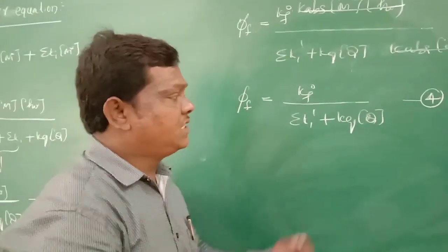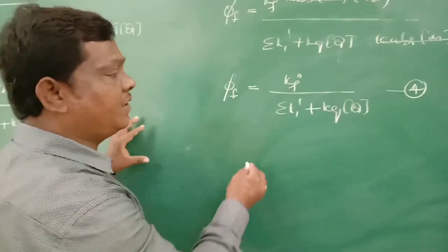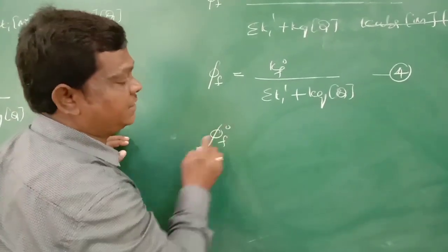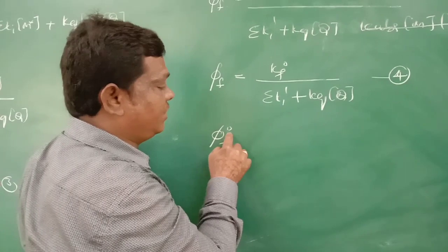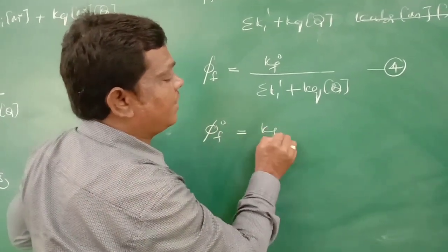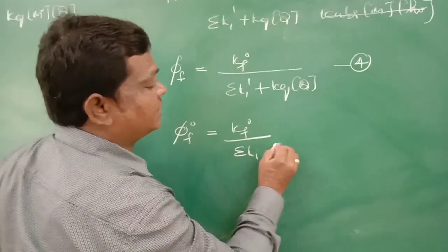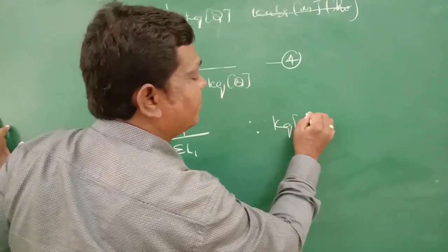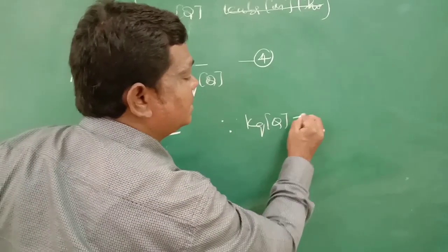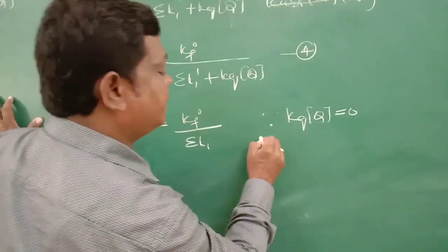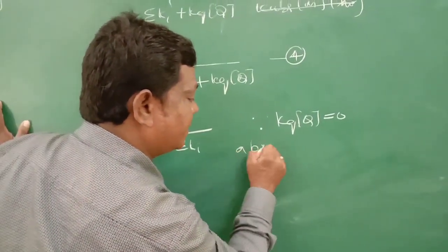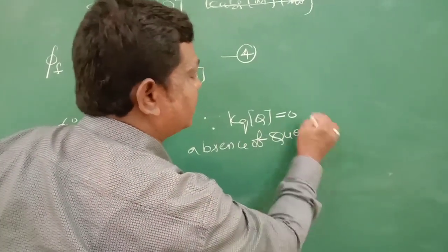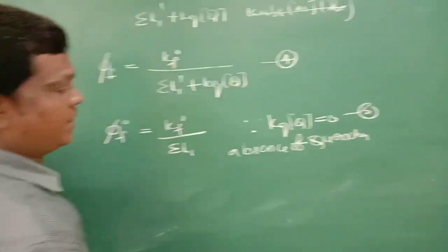In the absence of quencher, KQ × [Q] = 0, so the quantum yield for fluorescence is denoted φ₀F = K₀F / ΣKᵢ′. This is equation 5.